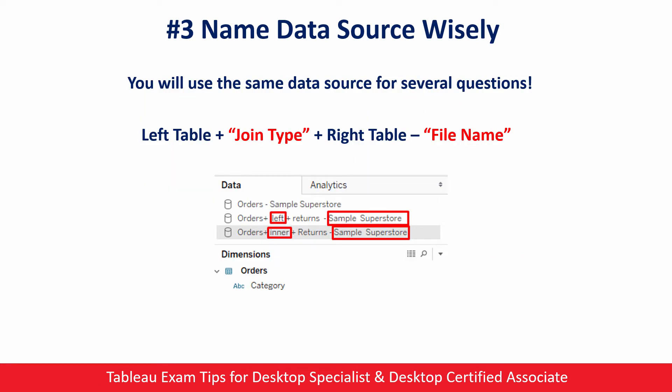Let's continue with tip number three: name your data sources wisely. This is extremely important. You need to connect to different Excel or CSV files to solve hands-on questions, and many times you will use the same data source to answer more than one question. That's why you should name your data sources wisely — you have to be able to find the data source you need instead of creating it again. This will help you save a huge amount of time. I suggest using the format: left table + join type + right table + file name, but you are free to use any format that works for you.